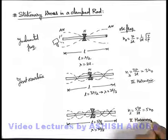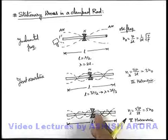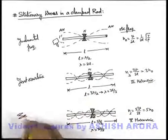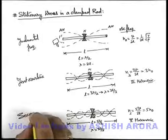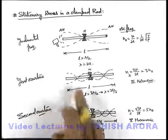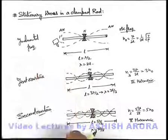We can say in case of a clamped rod, resonance can exist at all odd harmonic frequencies of the fundamental. This 5th harmonic is the second overtone, because this is the second possible frequency at which stationary waves can exist after fundamental frequency.